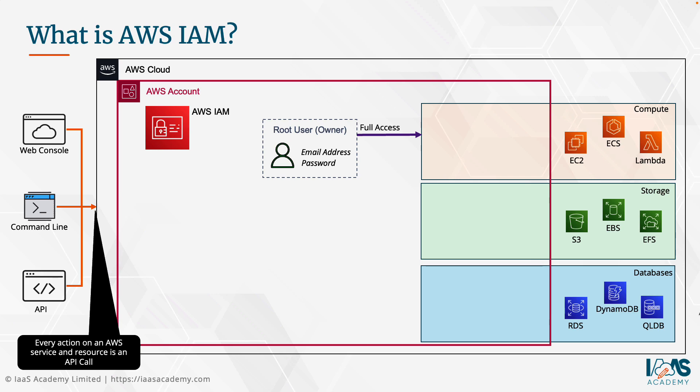But in a normal business environment, you're going to have multiple users in your organization — multiple colleagues. You can have specific users that are developing new applications, users who are just supporting existing environments, applications that need access to various services and resources, and you may need one service to be able to access another service on the AWS platform. You need a means of ensuring that you grant the right set of permissions to only authorized personnel, and the AWS Identity and Access Management service enables you to achieve this using two key features of IAM.